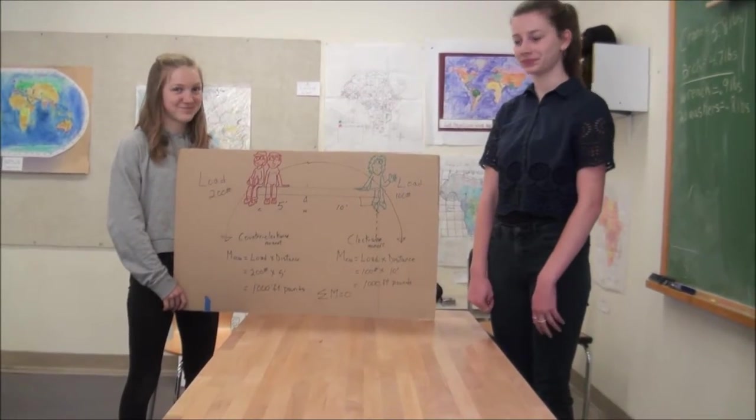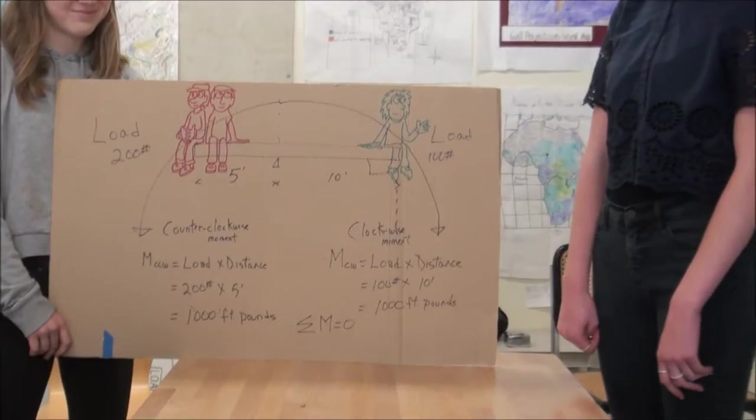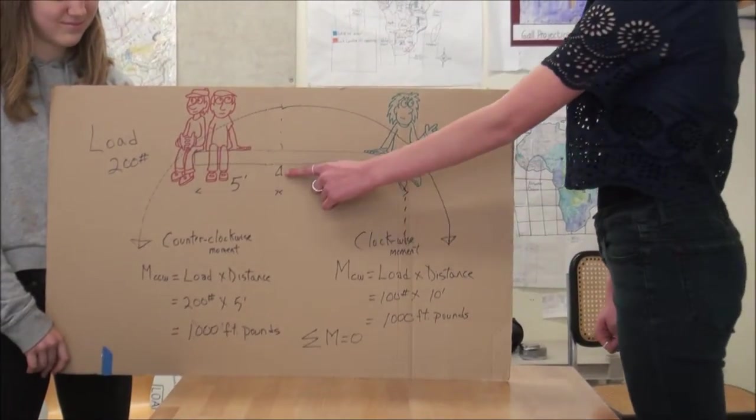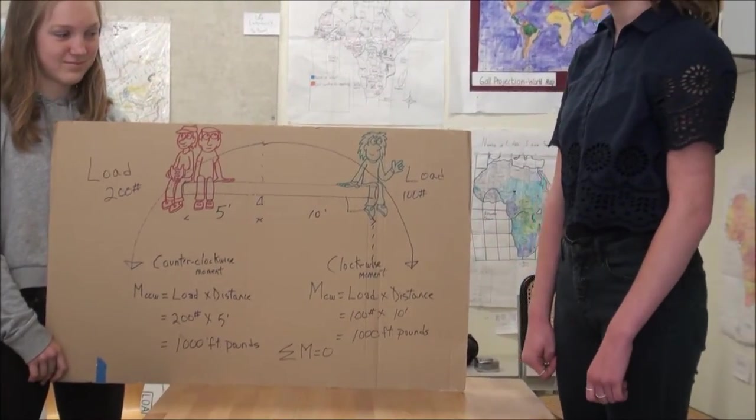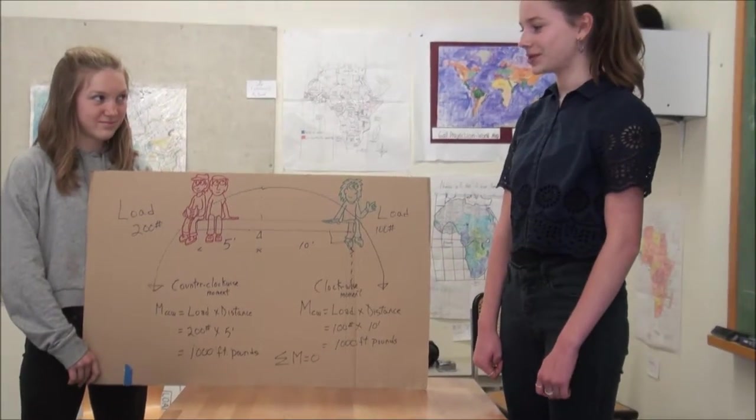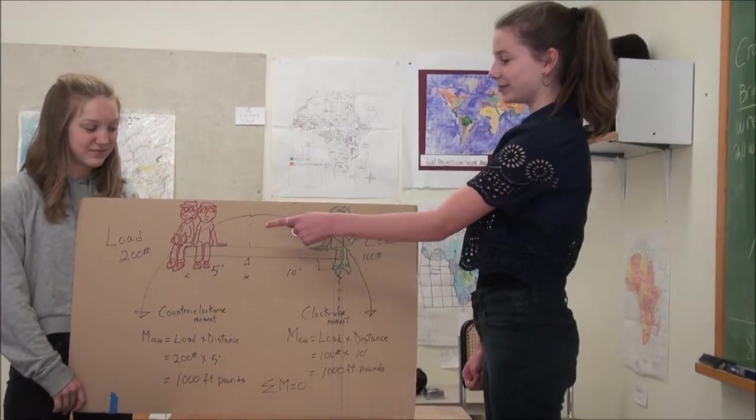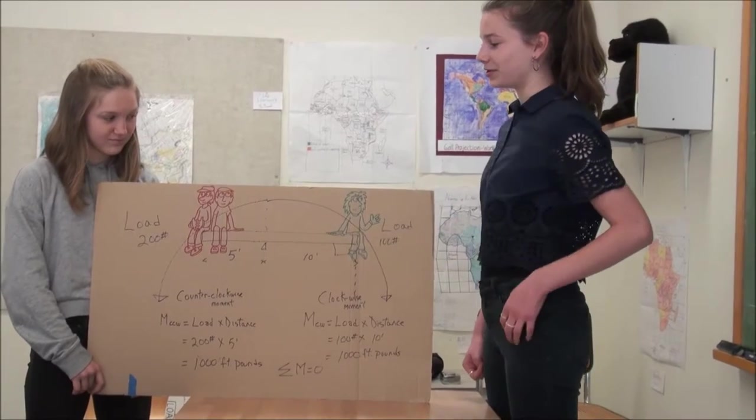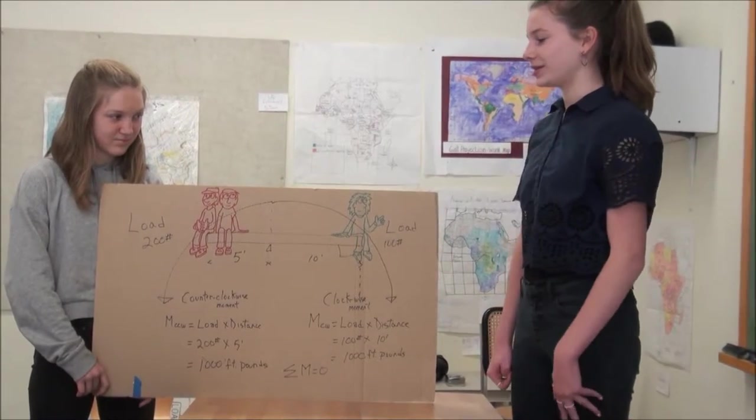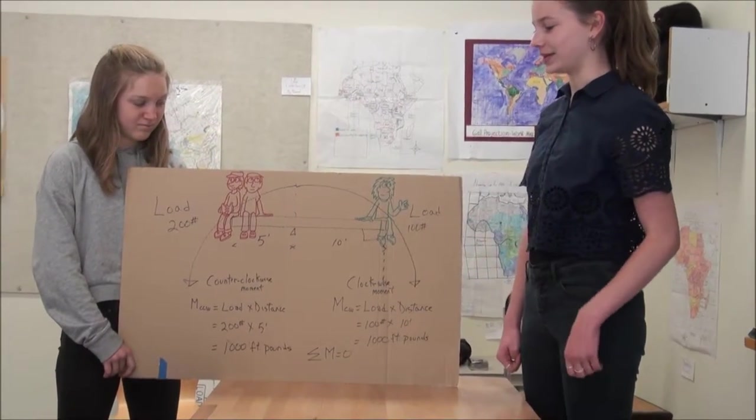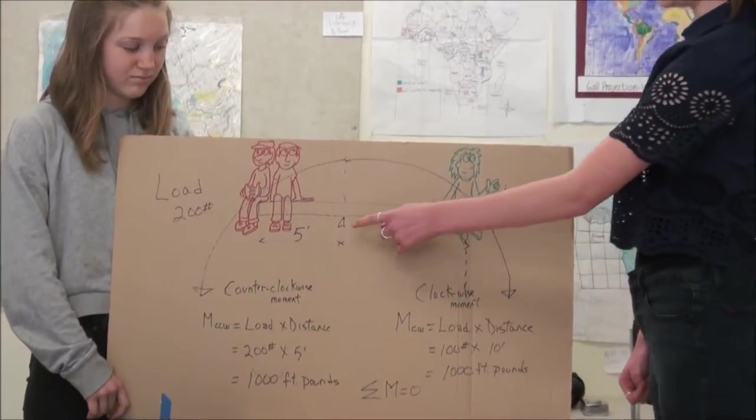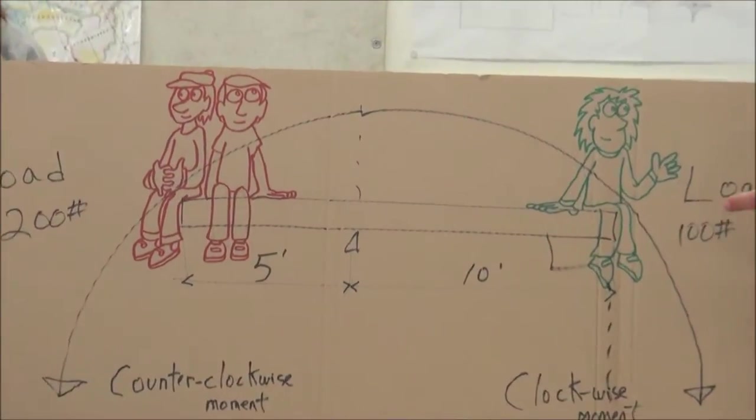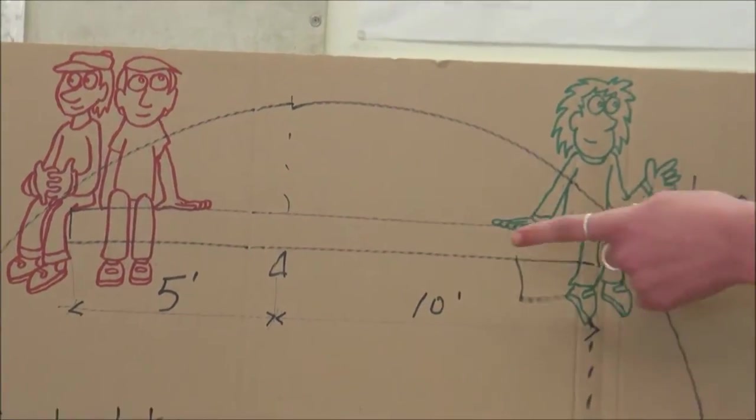Here's another balance beam, and the pivot point is right there where the triangle is. So we've got one kid balancing two kids. How does that work? Basically, each of these kids weighs 100 pounds, so their collective weight is 200 pounds, and they are 5 feet away from the pivot point here.